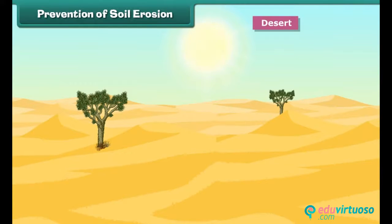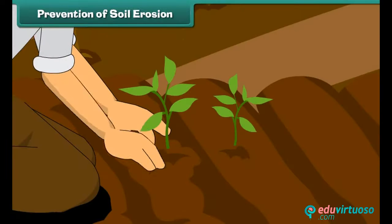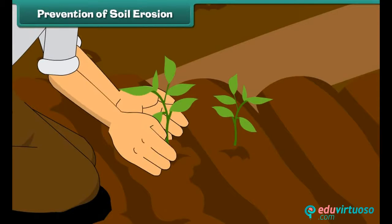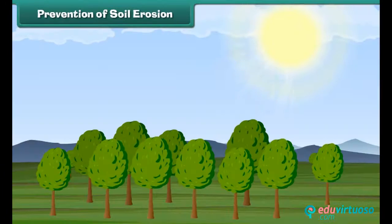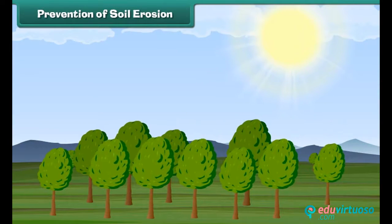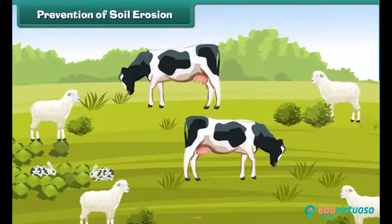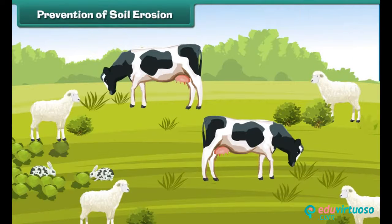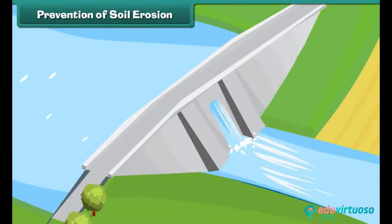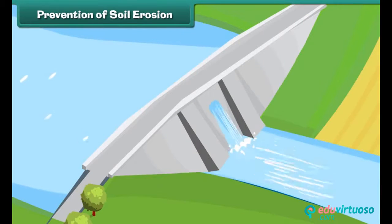It is the need of the hour to conserve soil by preventing soil erosion. One of the most common ways is to grow more and more trees. The roots of trees hold the soil firmly and do not allow it to wash away easily. Trees planted across the wind direction protect soil against high-velocity winds. Controlling overgrazing of the land by animals also controls soil erosion. Building dams can also control soil loss.